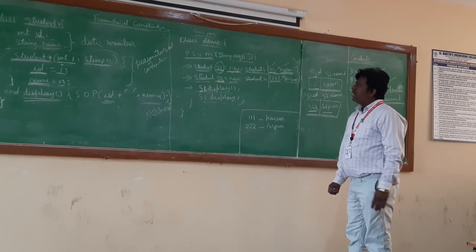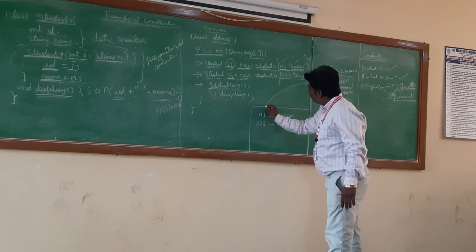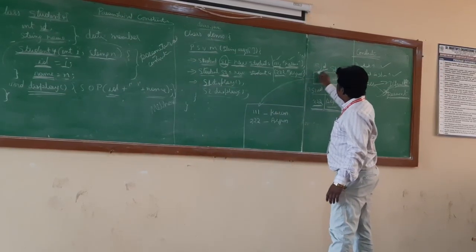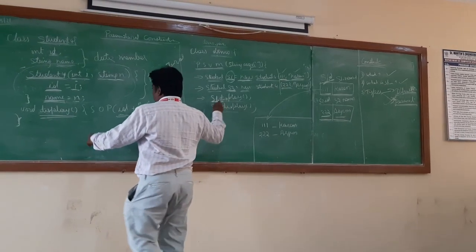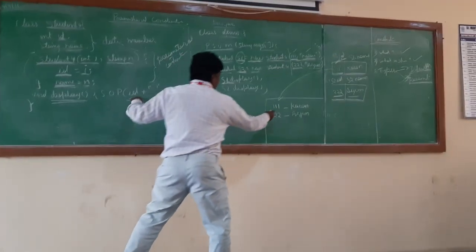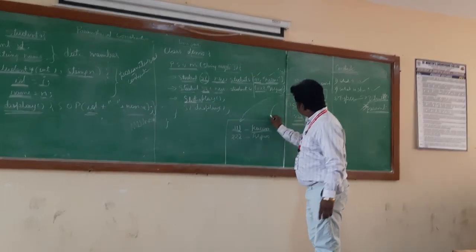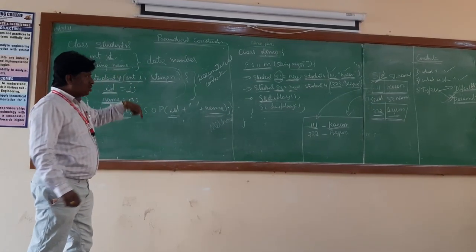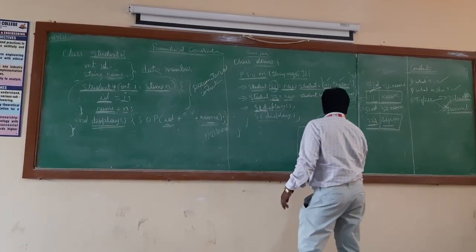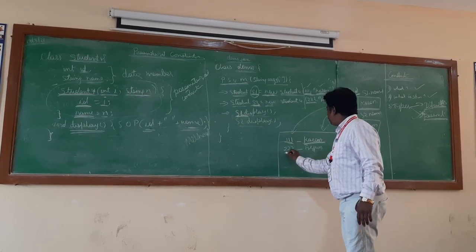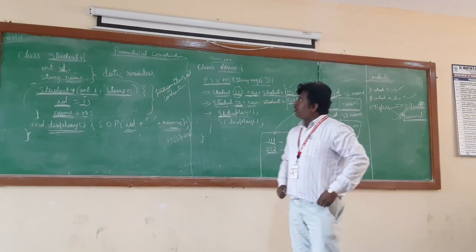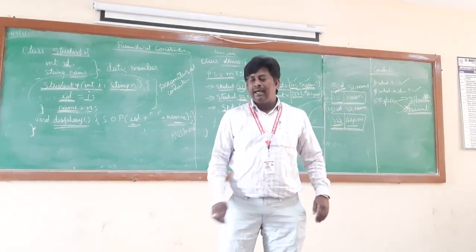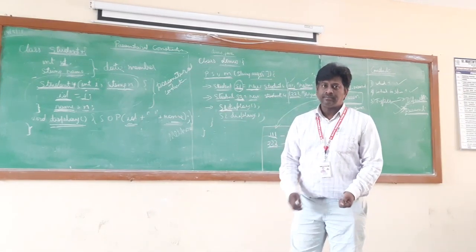So you understood how memory works for S1 and S2 objects. The first part is for S1's id and name; the second part is for S2's id and name. When printing, we access S1.id by calling display with S1, so S1.id is accessed and printed. Similarly, S1.name is displayed as Kiran, and S2 details — 222 and Arjun — are printed from the second object. That concludes today's topic on parameterized constructors. I hope everyone understood. Thank you.